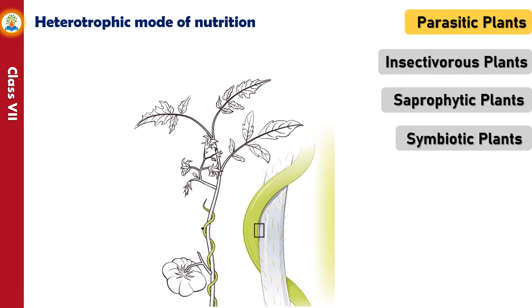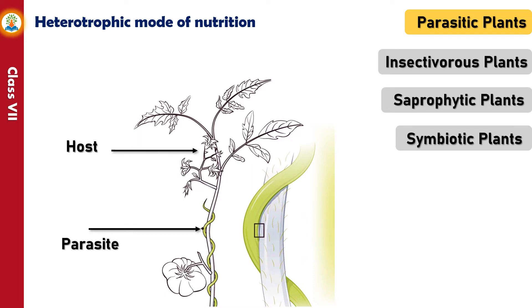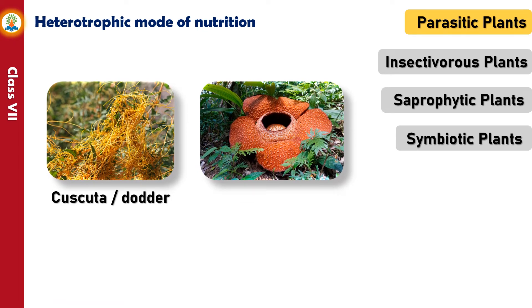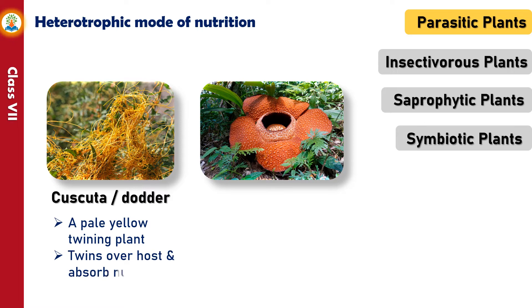A parasitic plant lives on another living plant and derives its nutrition from the latter. The plant that derives nutrition is called a parasite, and the plant from which the parasite derives its nutrition is called a host. Cuscuta is a pale yellow twining plant that twines over a host and absorbs its nutrients using special roots.